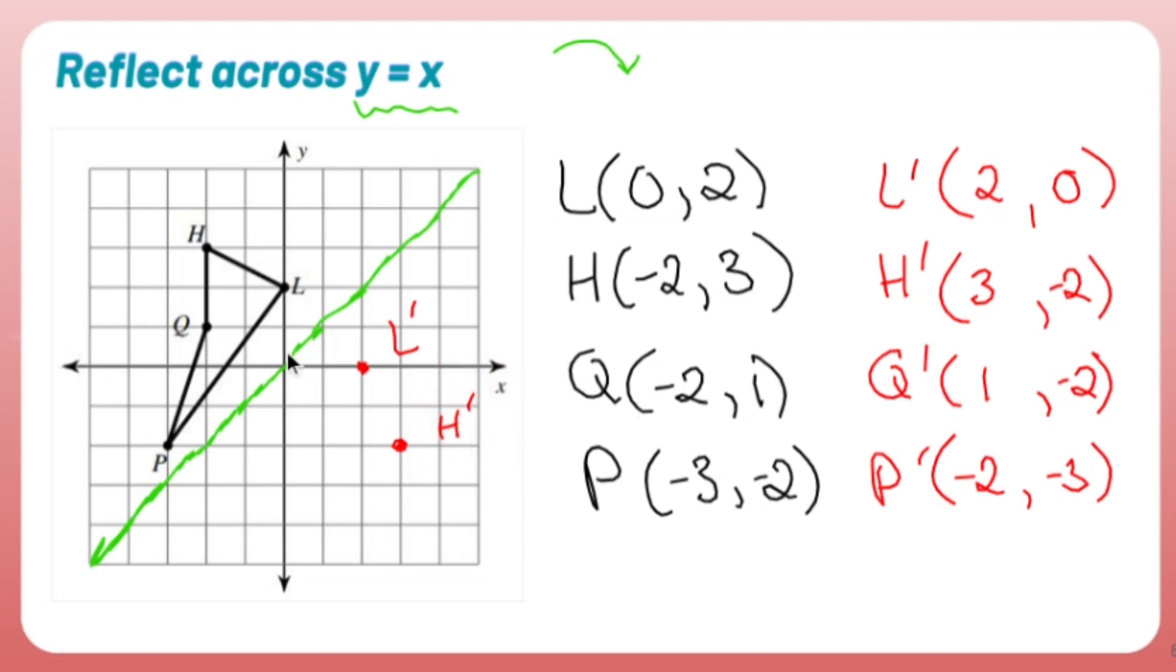Q prime is go right one, go down two. Q prime. And P prime is negative two, negative three. So go left two, go down three. That's P prime.